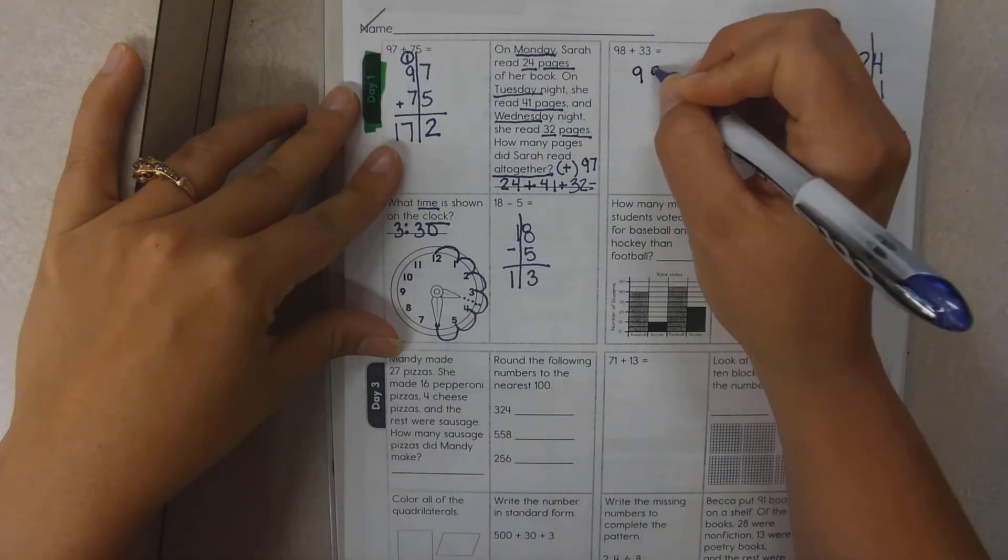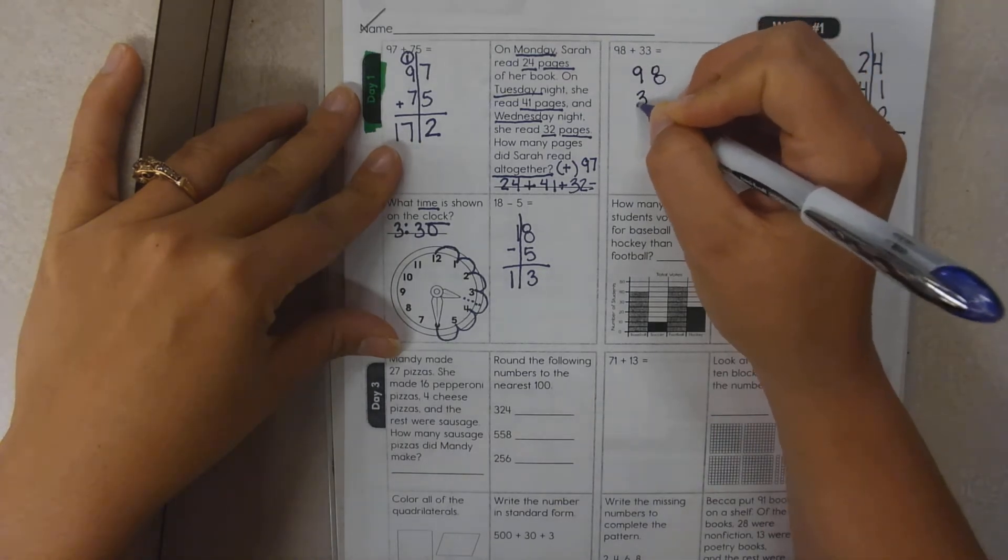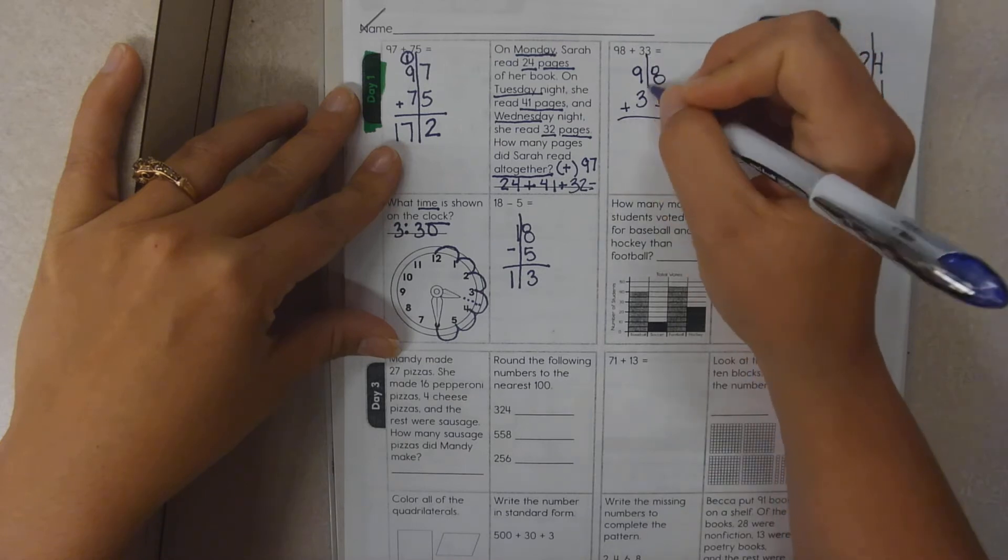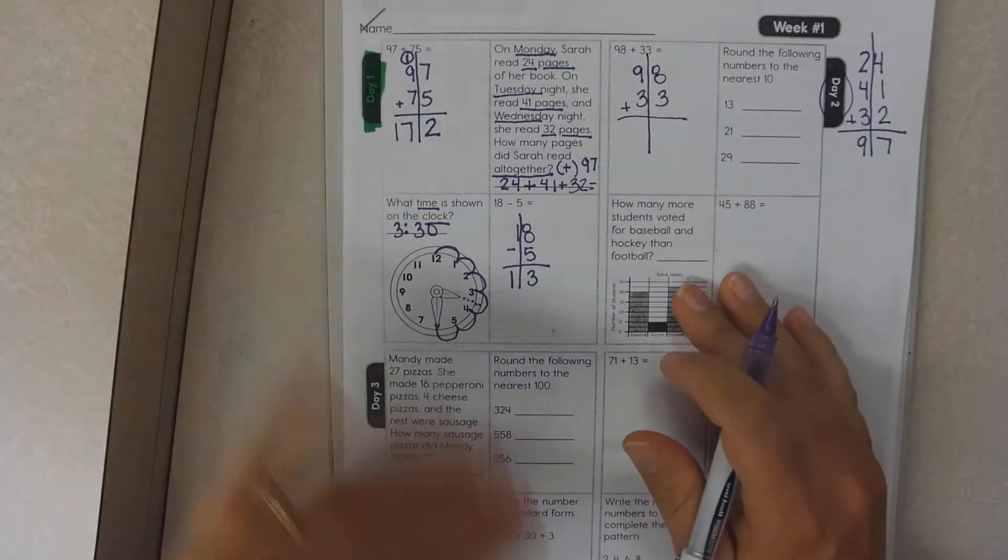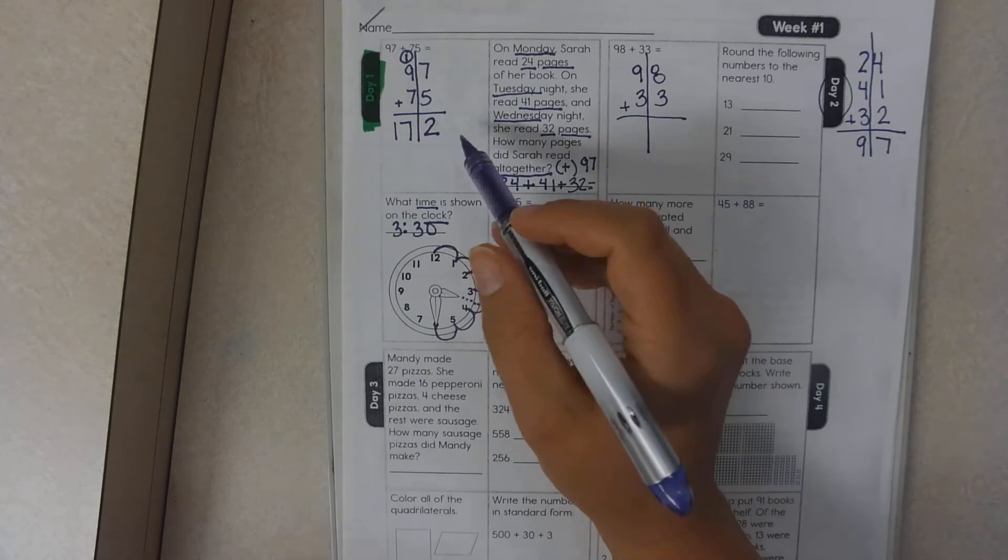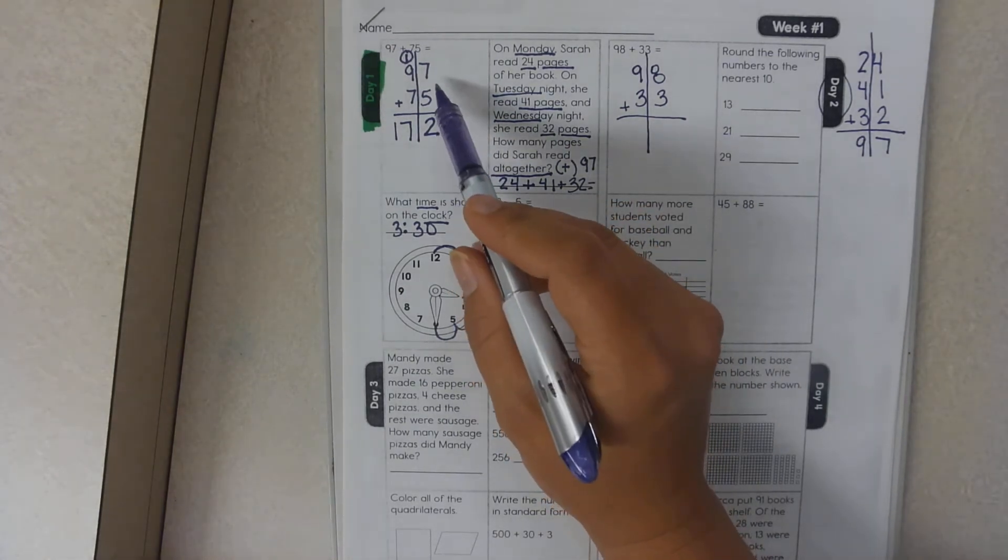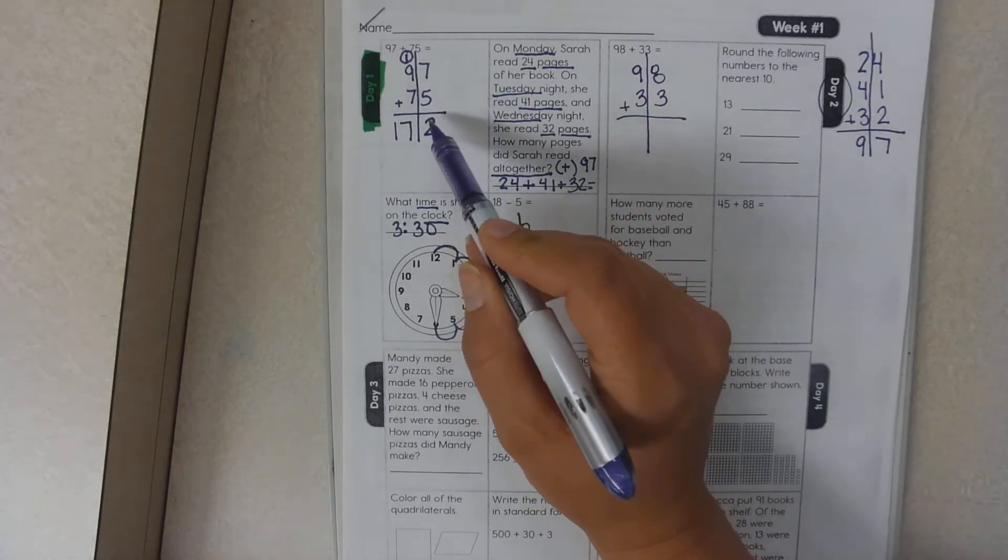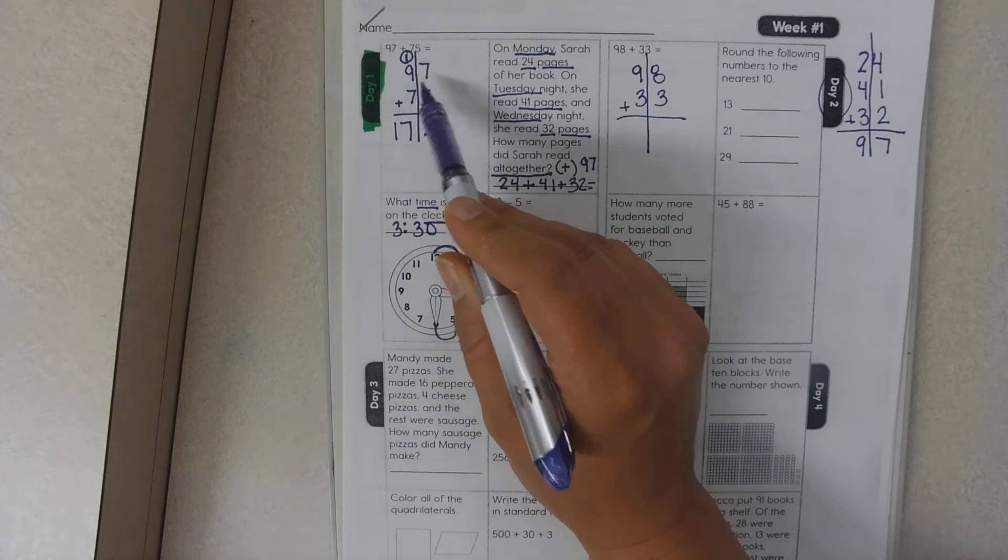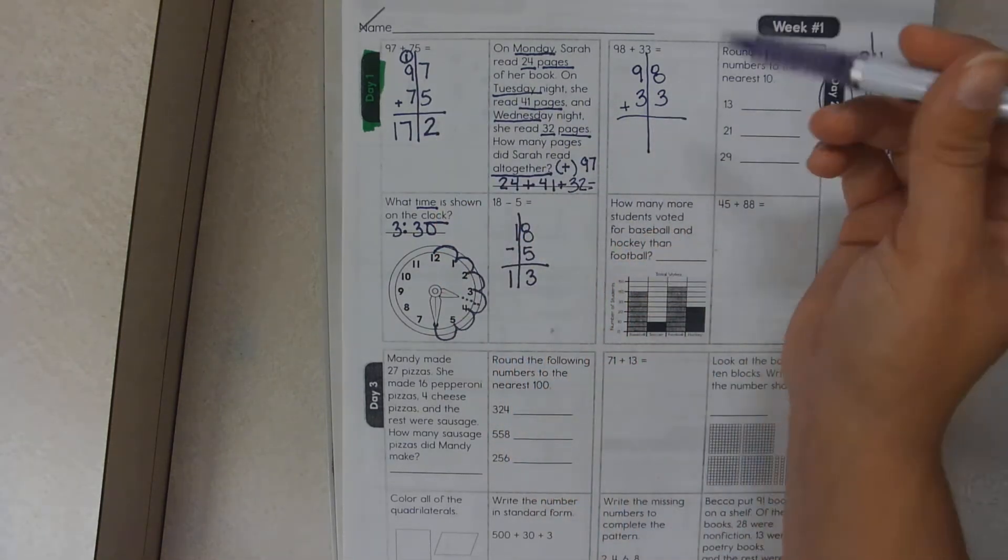Question number one is 98 plus 33. Once again, I'm going to ask you to draw those lines. On Monday, we started with 7 plus 2 and we carried. Today, I'm going to show you another method.